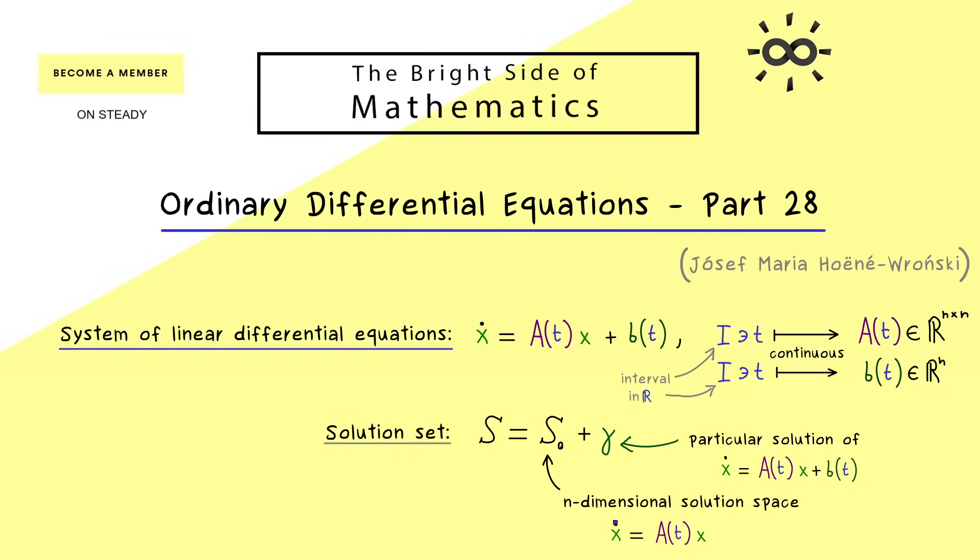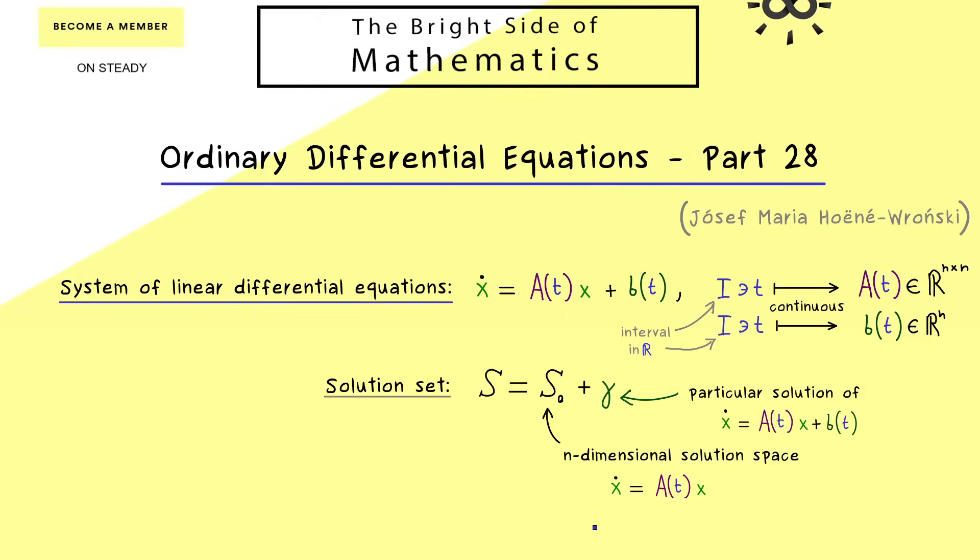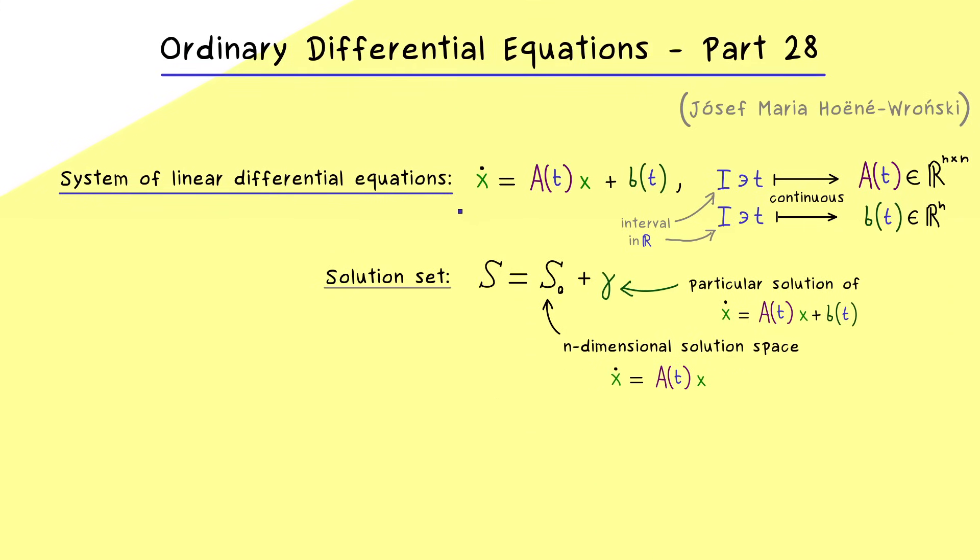Therefore, solving the homogeneous part is the key step in solving the whole system of ODEs. Therefore you can already remember, in order to define the Wronskian determinant, we only have to consider the homogeneous part. However, in contrast to some former videos, here we don't necessarily have an autonomous system.